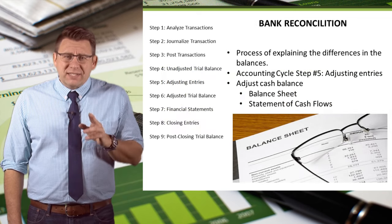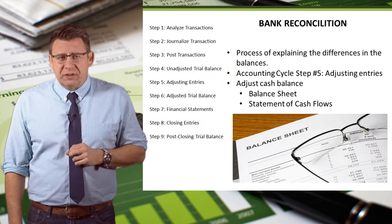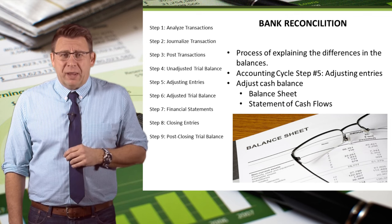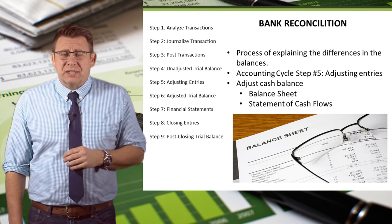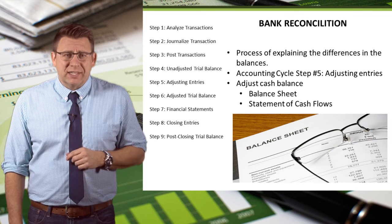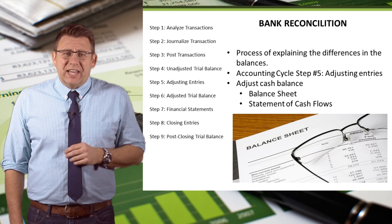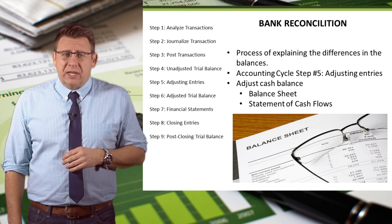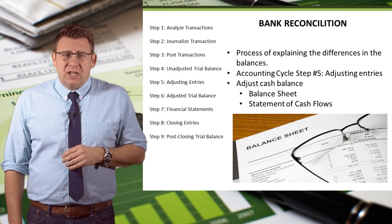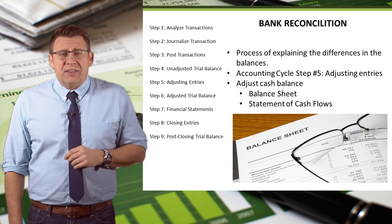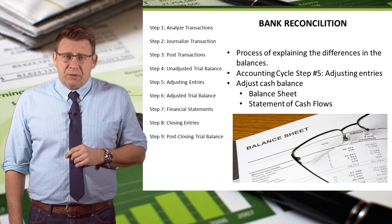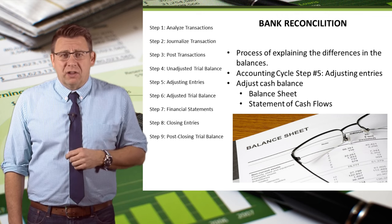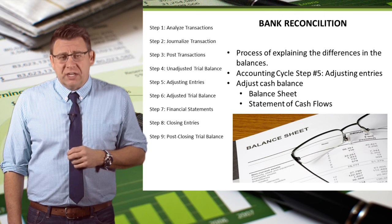The process we go through to determine the differences between the cash account and the bank statement balance is known as a bank reconciliation. Reconciliation is the process of explaining the differences in the balances. A bank reconciliation is done at the end of the accounting period and is part of step 5 in the accounting cycle: adjusting entries.